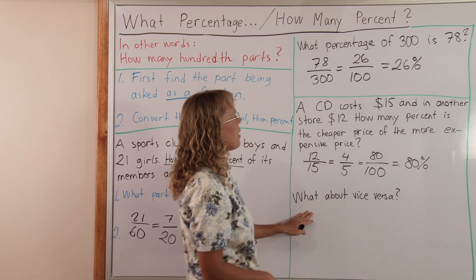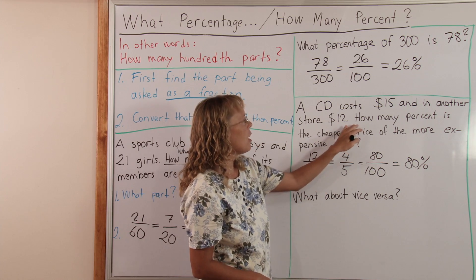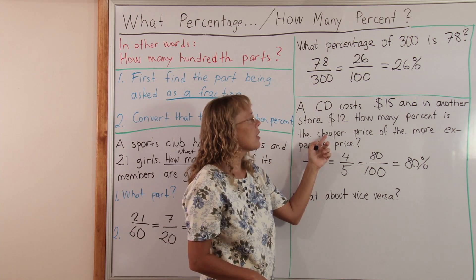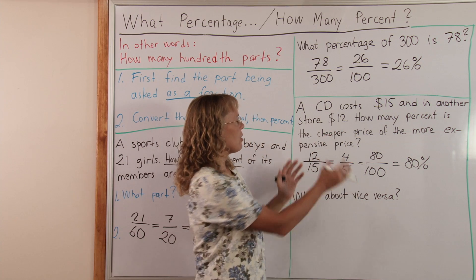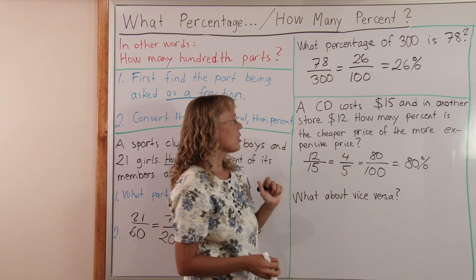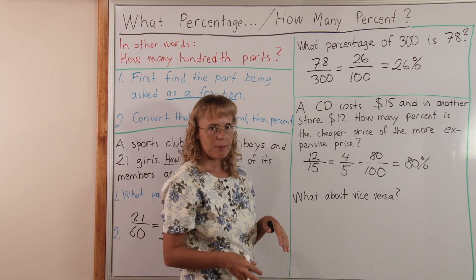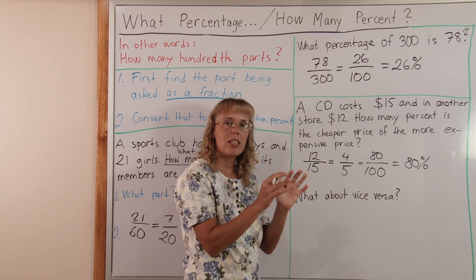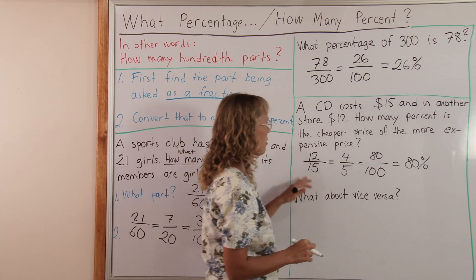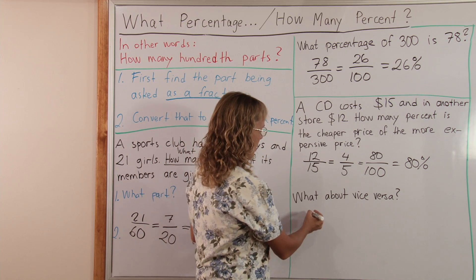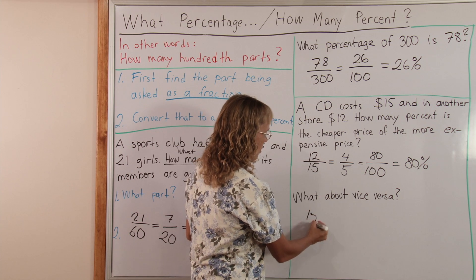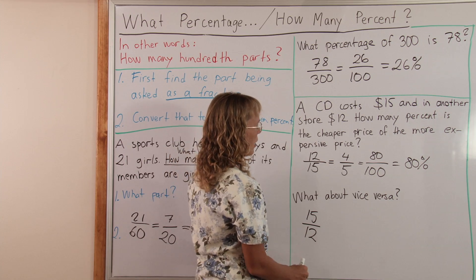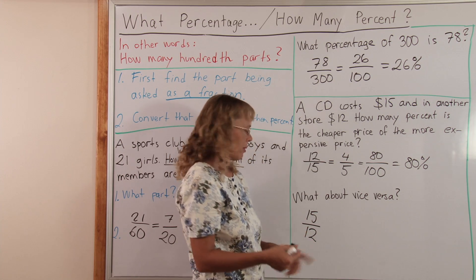What about vice versa? This means reversing the question so that: how many percent is the more expensive price of the cheaper one? We expect this to be more than 100%, since the more expensive one is more than 100% of the cheaper price. Vice versa — it's reversed. We now have 15 over 12. We start with the fraction again: what part is the more expensive of the cheaper? It's 15 over 12.